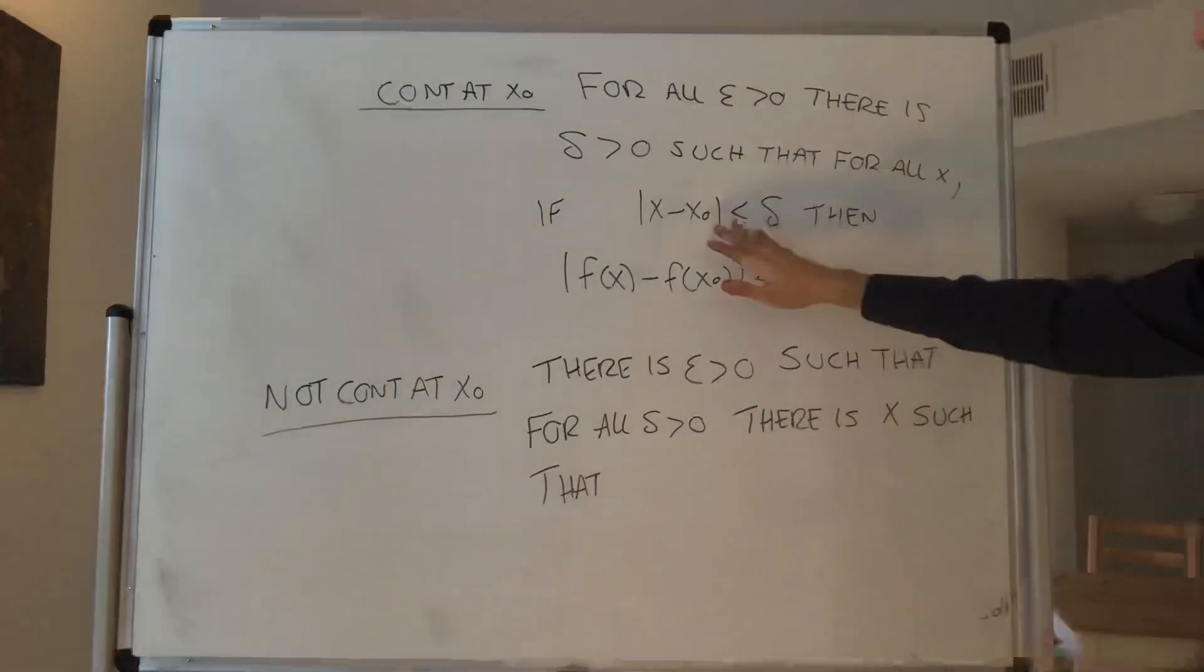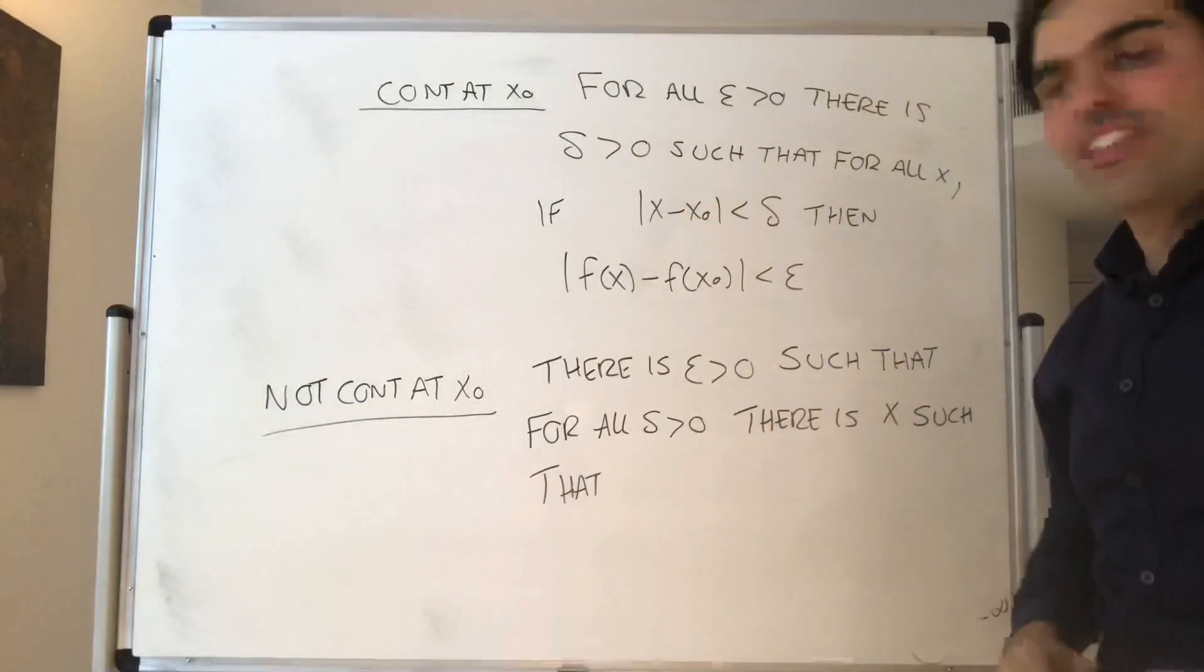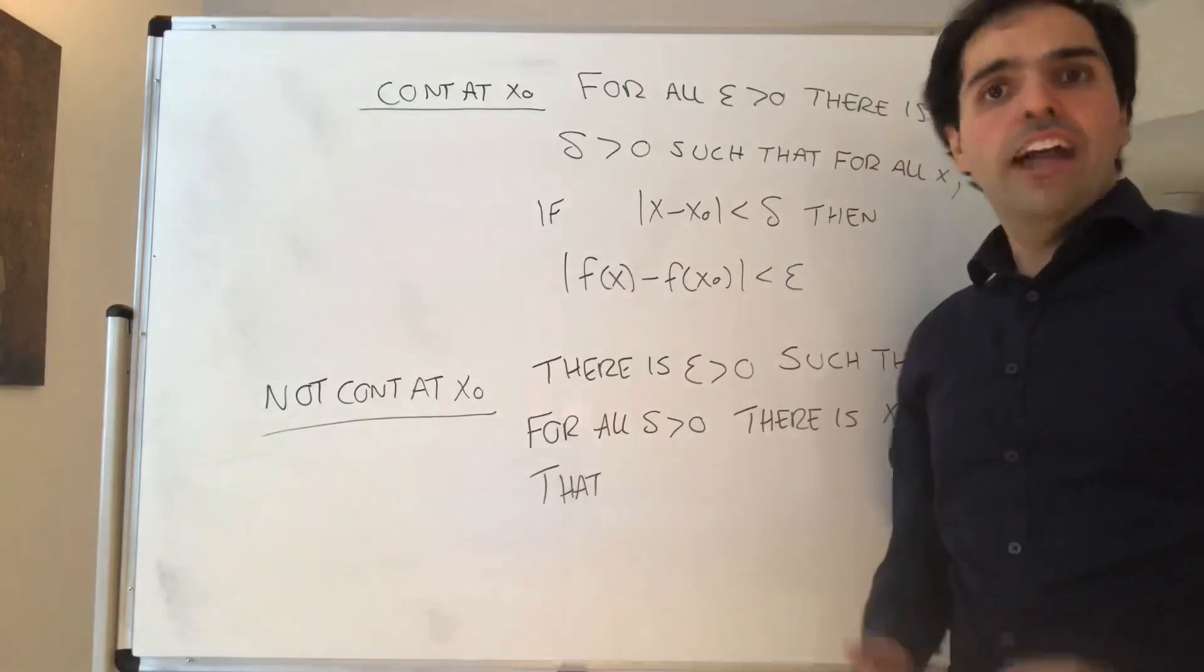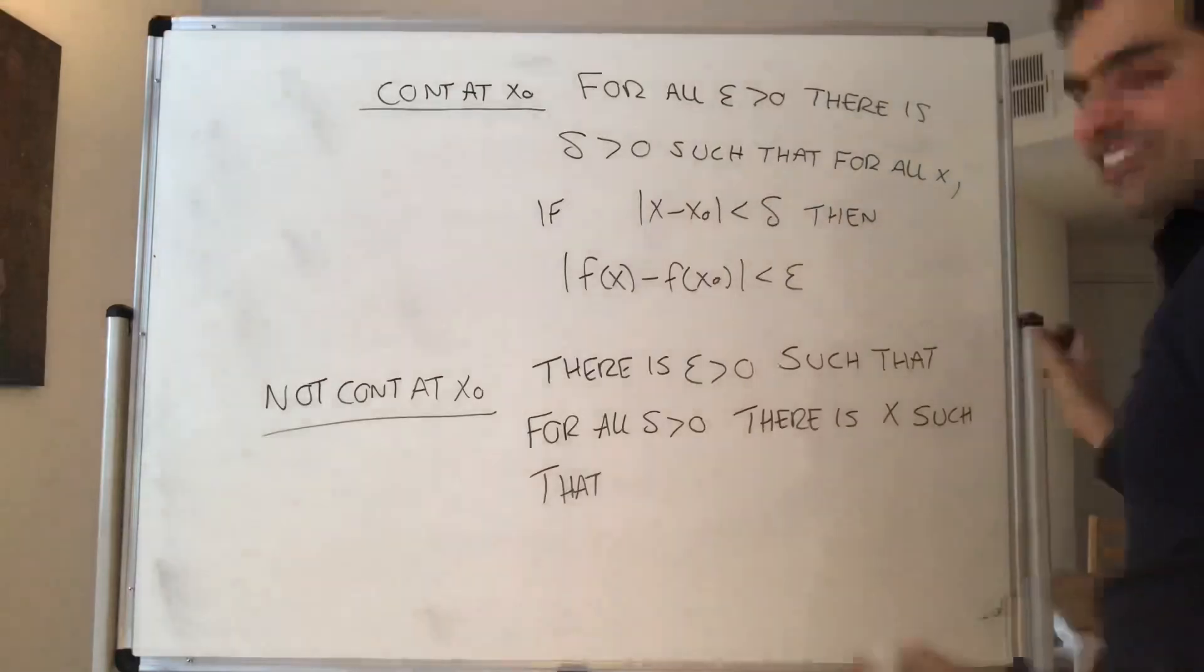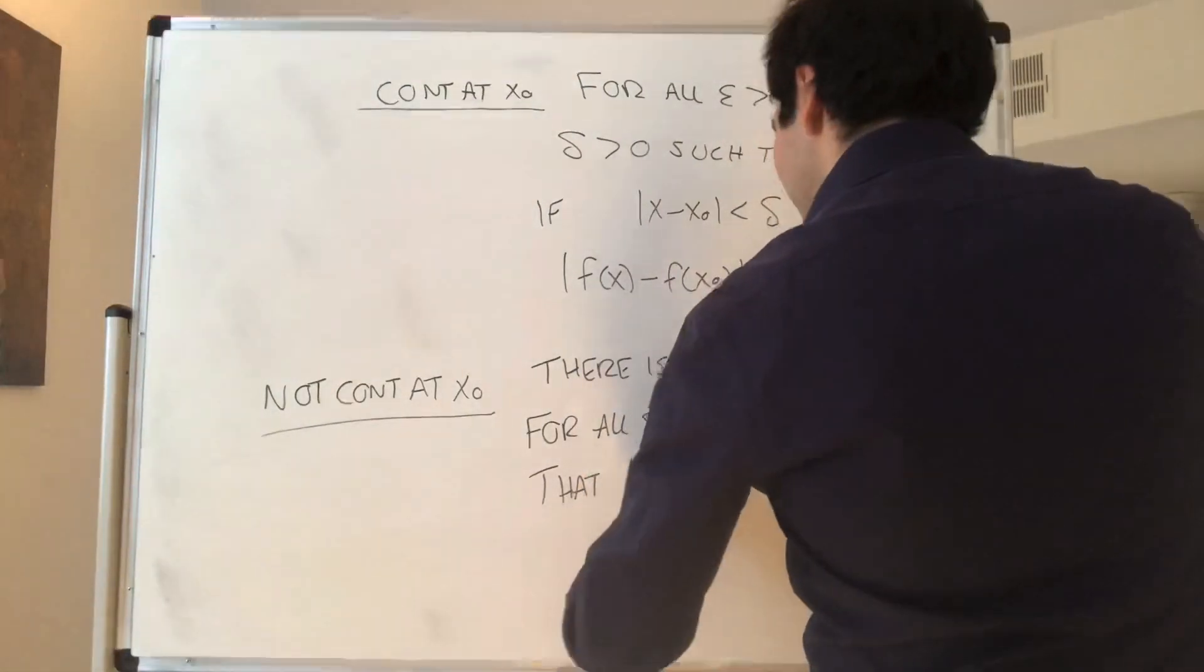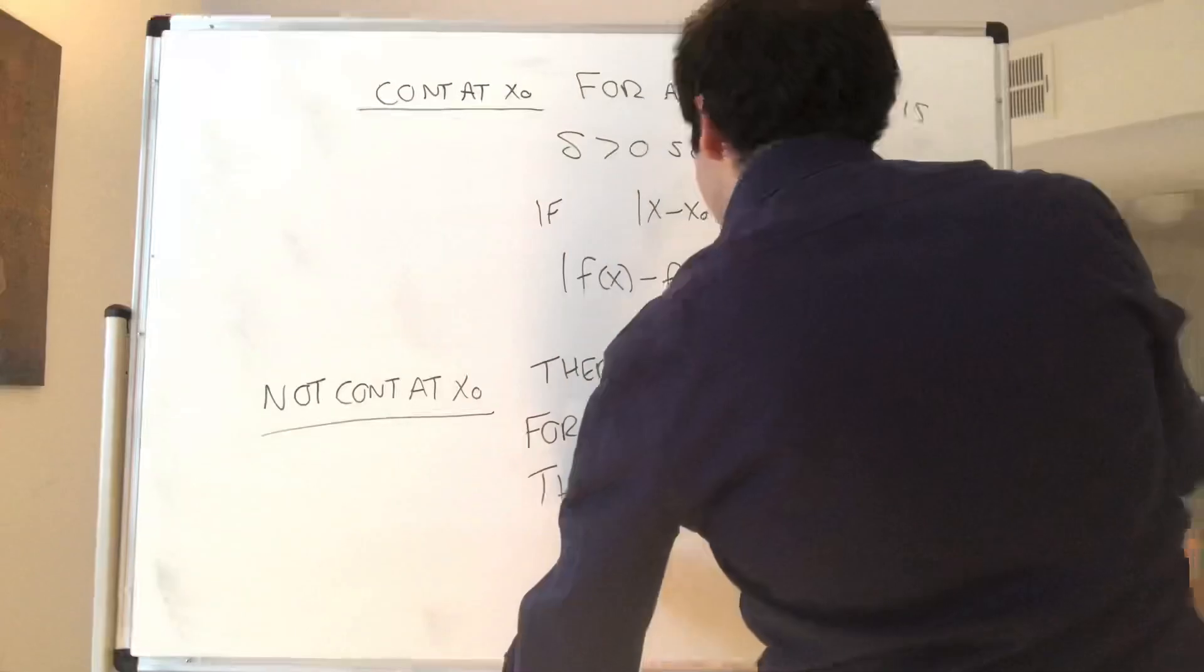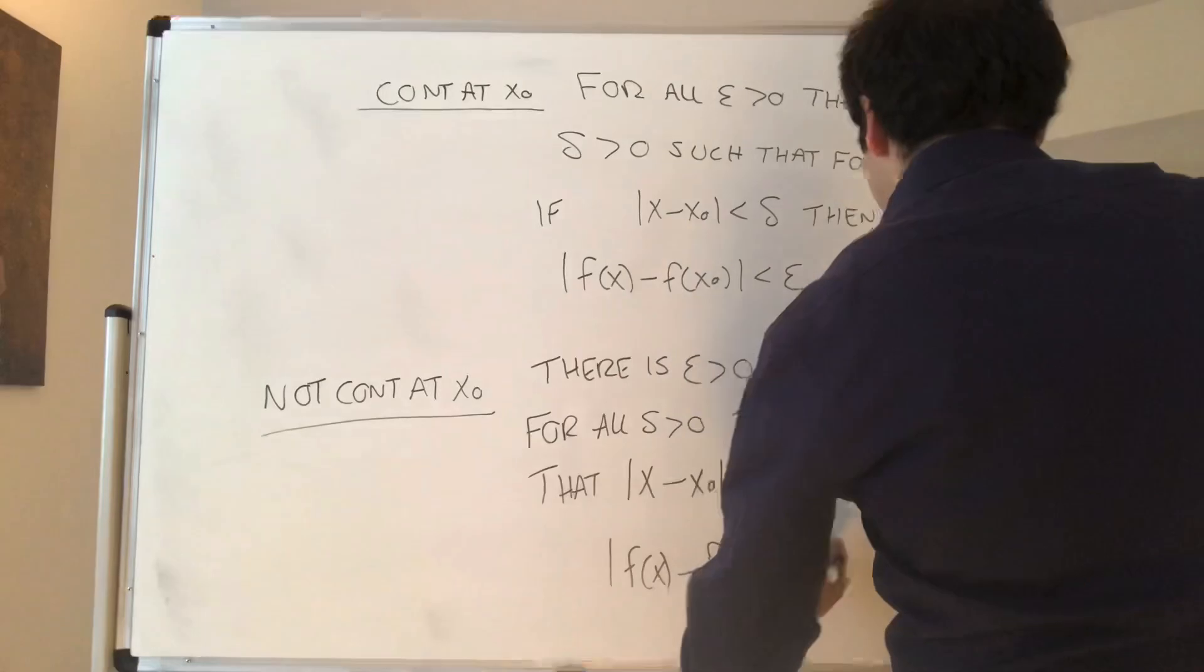Okay, now what's the negation of if something then something? For instance, what's the negation of I do math, therefore I'm happy? It's I do math, but I am not happy. So such that, which I hope you are happy, it's very important, such that x minus x0 is less than delta, but f of x minus f of x0 is greater or equal to epsilon.